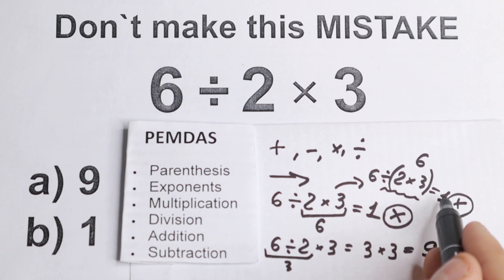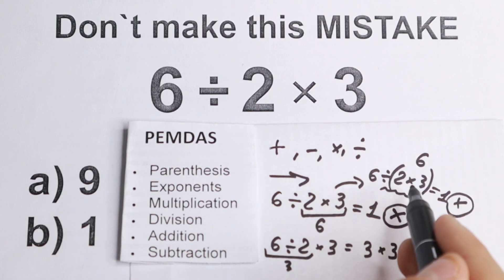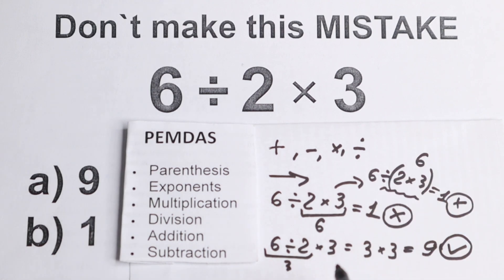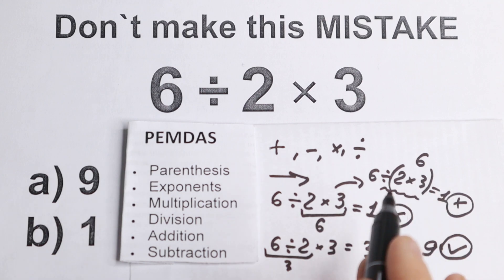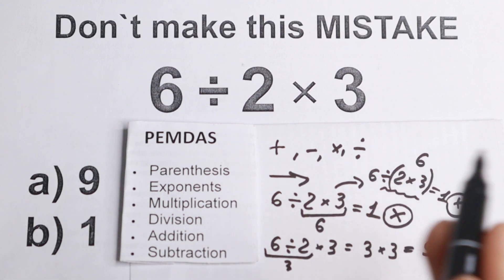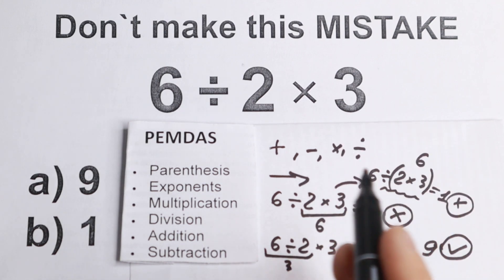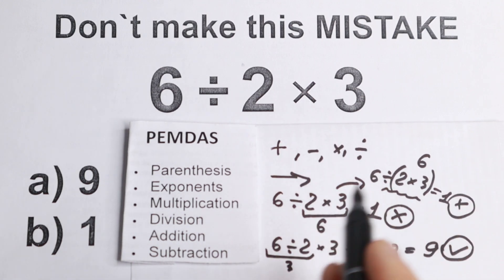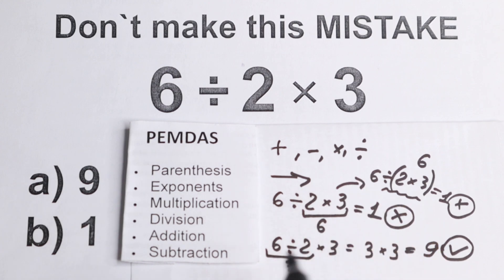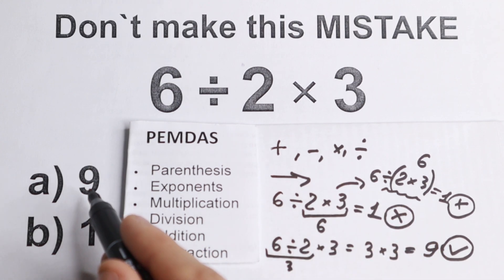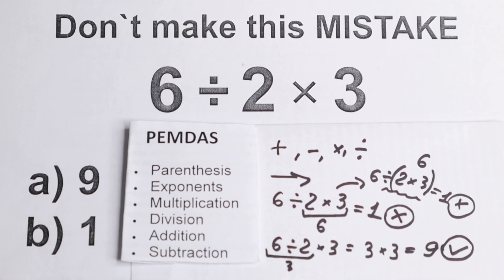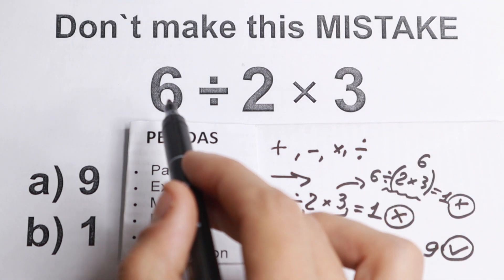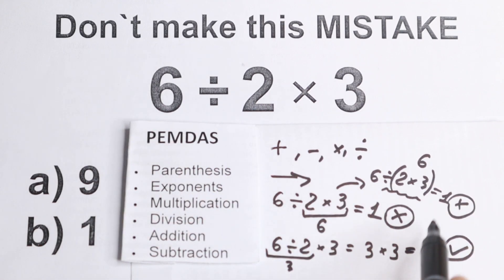As I mentioned, 1 would only be correct if you have the parentheses around 2 times 3. Now, if you type this into a basic calculator on your laptop or phone, some of those calculators just do the problem as you type it in and may give you 1. But if you use a more sophisticated calculator, like a scientific or graphing calculator, you type the problem in and hit enter — it gives you 9, because it knows the order of operations.